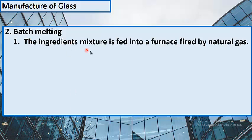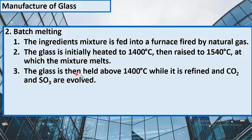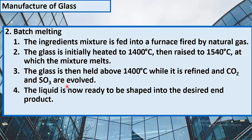The second step is melting. The ingredient mixture is fed into the furnace, fired by natural gas. The glass is initially heated to 1400°C, then raised to 1540°C at which the mixture melts. The glass is then held above 1400°C while it is refined and CO₂ (carbon dioxide) and SO₃ are evolved. The liquid is now ready to be shaped into the desired end product.